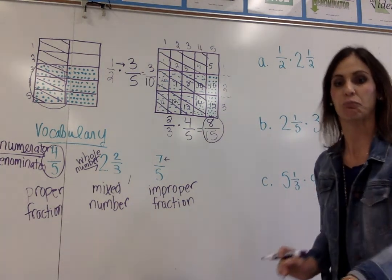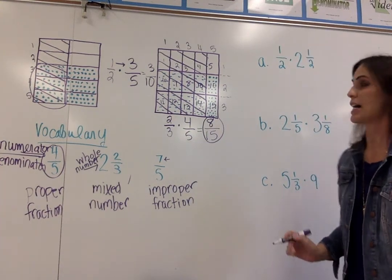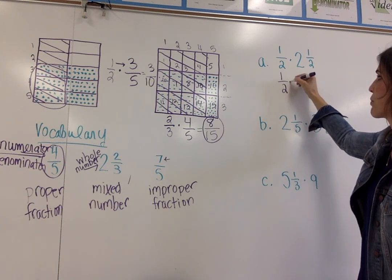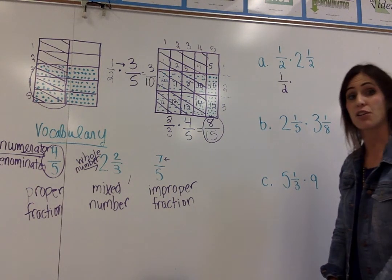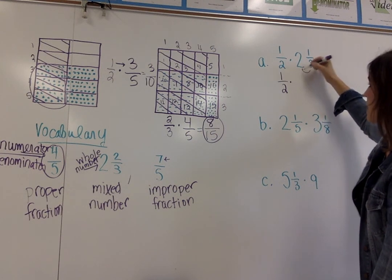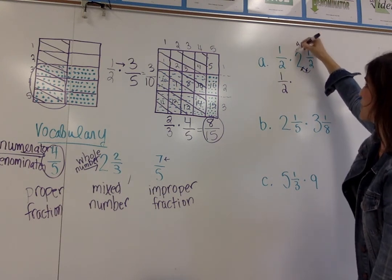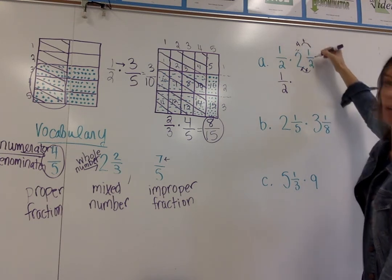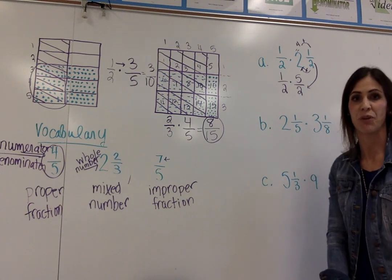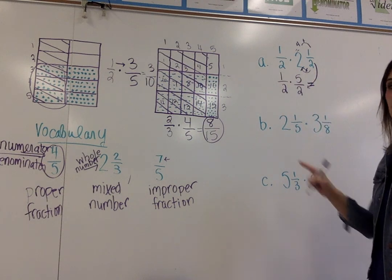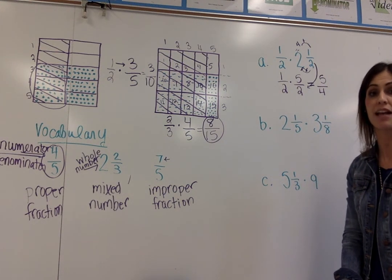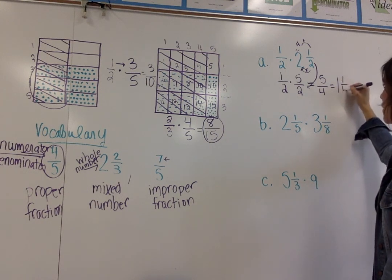Now let's take a look at multiplying fractions. In example a, I have the fraction one-half, which is a proper fraction, times two and a half, which is a mixed number. If you have a mixed number, you need to change it into an improper fraction before you multiply. The denominator times the whole number — two times two is four — then add it to the numerator: four plus one is five. That becomes the new numerator and the denominator stays the same. Multiplying, one times five is five and two times two is four, giving five-fourths, or one and one-fourth.